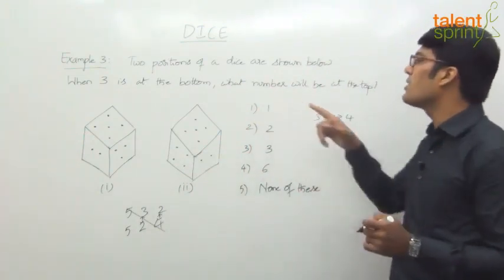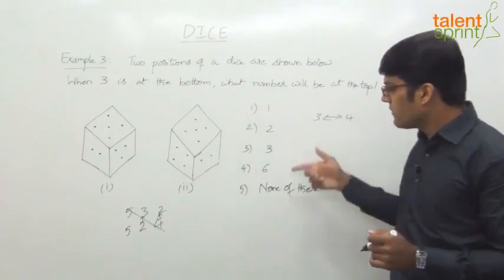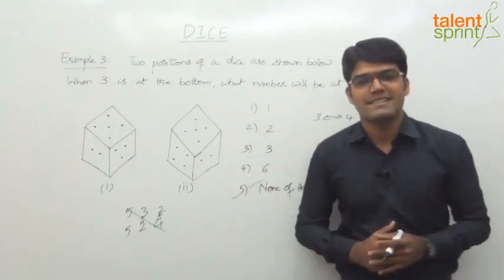Now, what does the question say? If 3 is at the bottom, what number will be at the top? 4 will be at the top. And 4 here is not given. So, option 5, none of these is the answer.